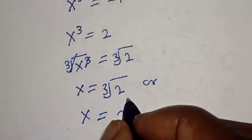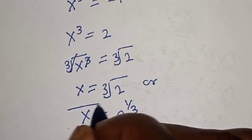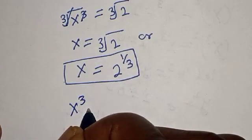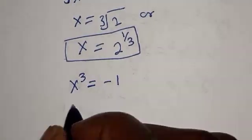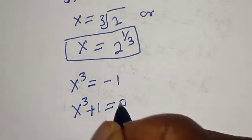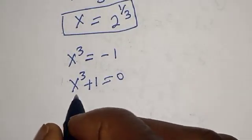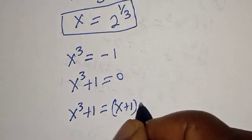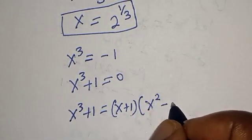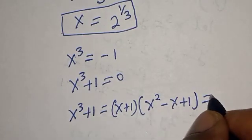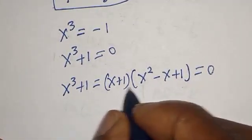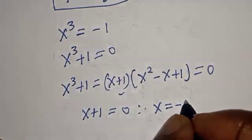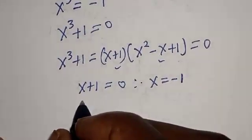For s raised to power 3 equals minus 1, we rewrite as s raised to power 3 plus 1 equals 0. Using the sum of cubes factorization, this becomes s plus 1, bracket s squared minus s plus 1, equals 0. From here we have two cases: s plus 1 equals 0, therefore s equals minus 1.